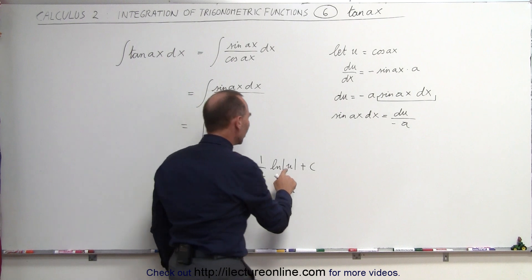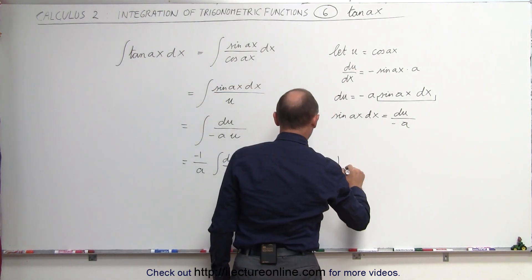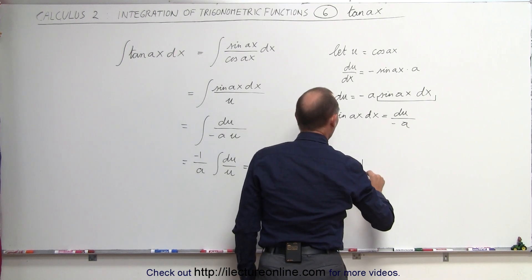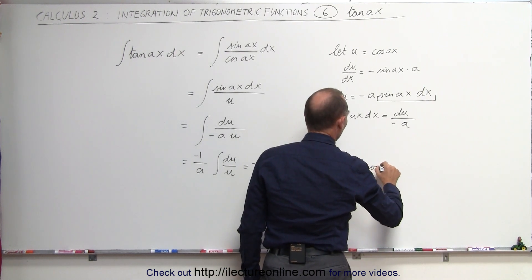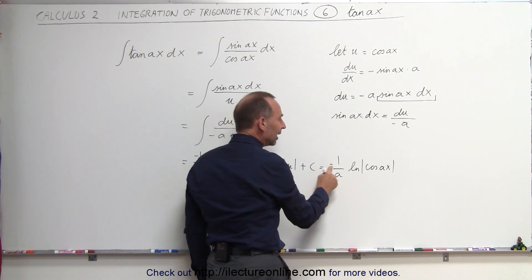Now what we can do is replace u by what u is equal to. This is equal to minus 1 over A times the natural log of the cosine of Ax. We can also take the negative sign and move it up here.